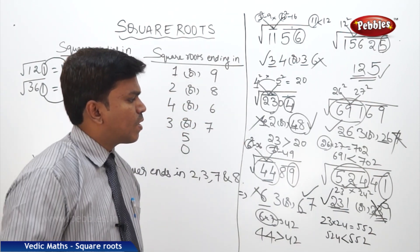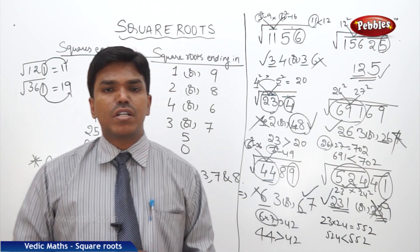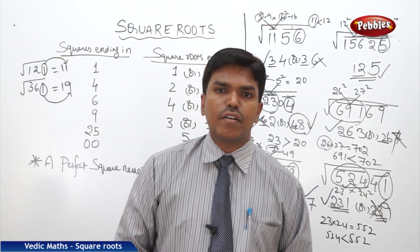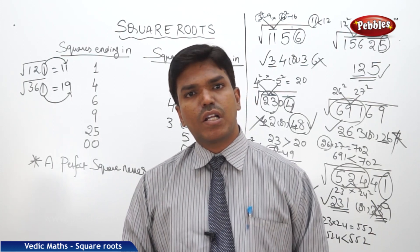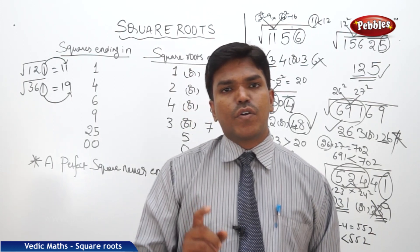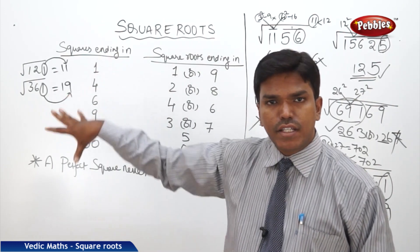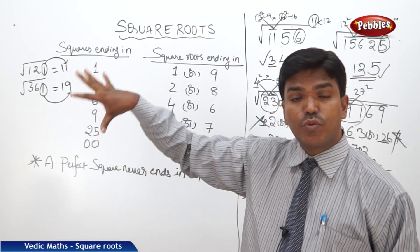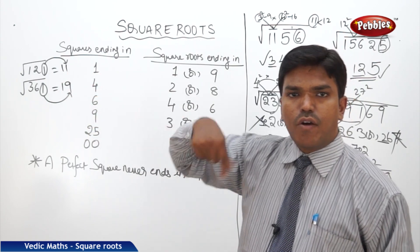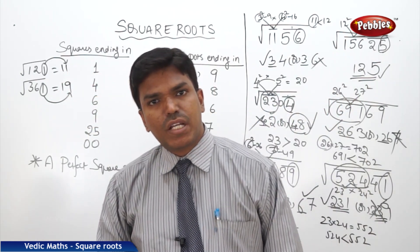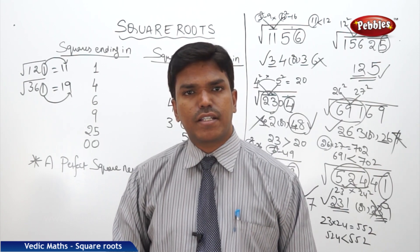Like this, we can find out the square roots of any 4-digit or 5-digit perfect square number. But remember, to find out the square roots easily, it is mandatory to know up to 30 squares by heart. Now we will go to our next topic, which is cube roots — how to find out cube roots very easily.